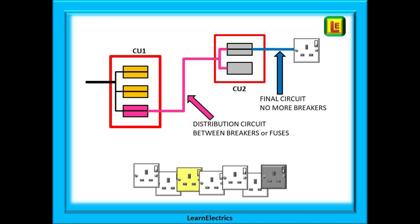Now let us take a cable from the consumer unit into the garage and terminate it into a second consumer unit for use in the garage. The cable that connects the two consumer units is not a final circuit — there is another set of breakers to go through in the second consumer unit. This is called a distribution circuit; it is distributing electricity from one consumer unit to another. The cables leaving the second consumer unit going into sockets or lights are final circuits, as they have no more circuit breakers to pass through.